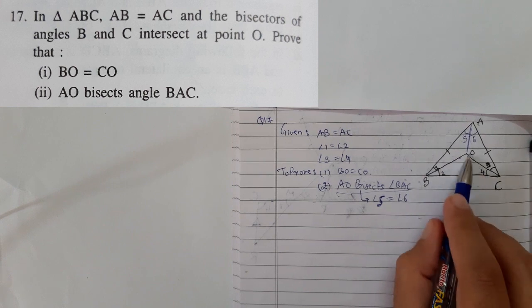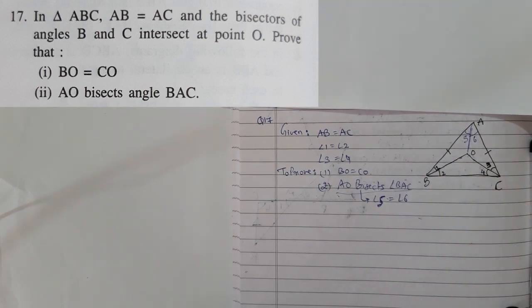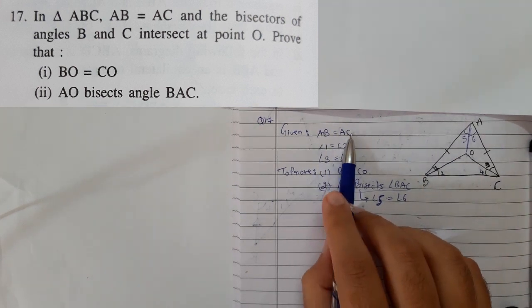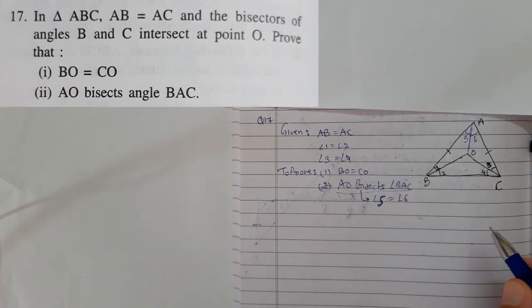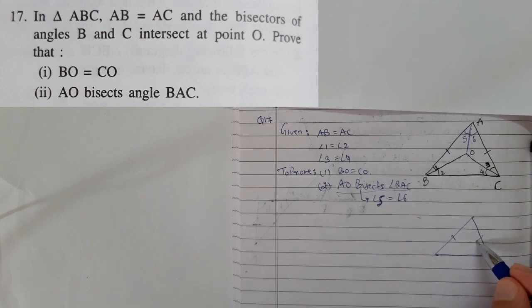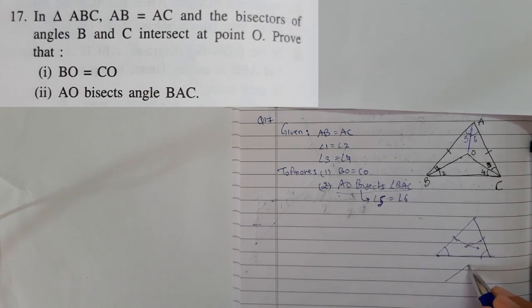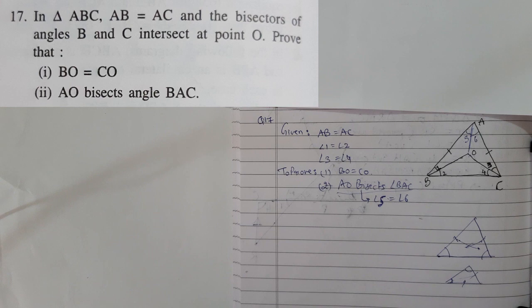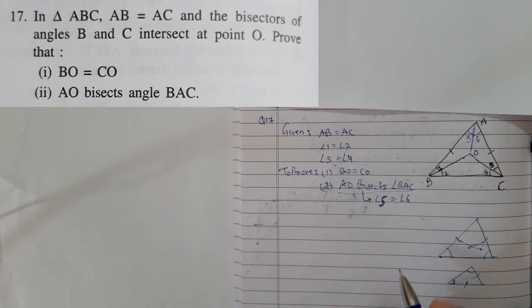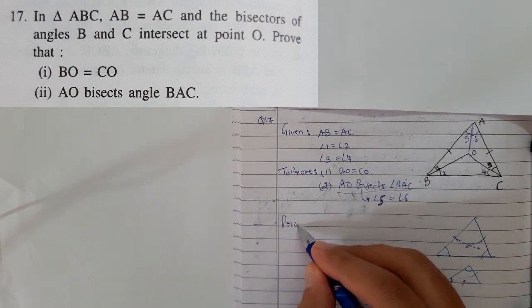So BO equals CO in this triangle. Let's start from the given information AB equals AC. As we know, in an isosceles triangle, if two sides are equal, opposite angles are also equal. Remember this thing. If two sides are equal, opposite angles are also equal. Suppose these two sides are equal, this angle and this angle are equal. So let's take that in the proof section.